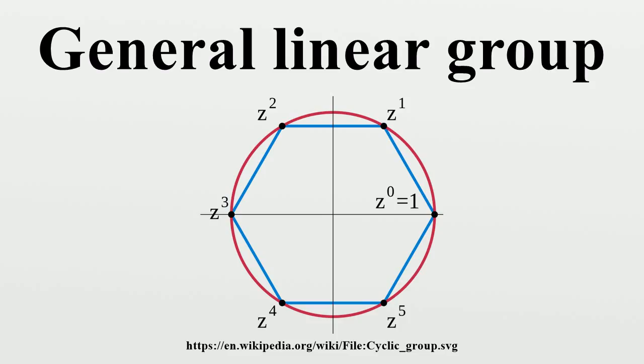In fact, GL(n,F) can be written as a semidirect product: GL(n,F) = SL(n,F) ⋊ F*. When F is R or C, SL(n,F) is a Lie subgroup of GL(n,F) of dimension n² - 1.